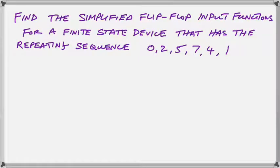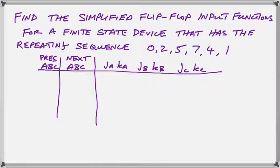Hello and thanks for watching. In this short example, we are going to just go from the state sequence to the flip-flop input functions and we're going to assume that we're using JK flip-flops. So the first thing we have to draw is our state table along with the flip-flop input functions as shown there.